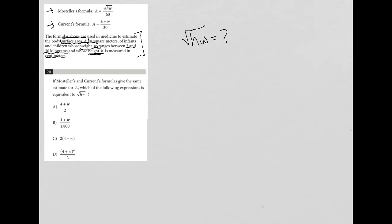If we're getting the same value for both formulas, it means both of these formulas represent A. So I'm just going to write them down again. A equals root HW over 60, and we have A equals 4 plus W over 30. That should mean that I can cross out this A and replace it with the value of A from the other formula. I believe that's what the question means by they give the same estimate.